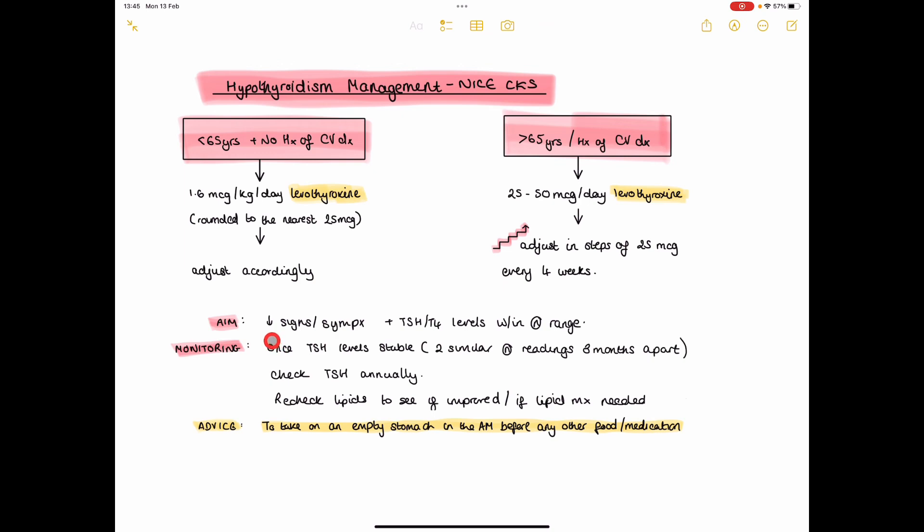The aim is resolution of signs and symptoms and normal thyroid function tests. Once the thyroid stimulating hormone TSH levels have become stable, which NICE defines as two similar normal readings three months apart, you can check the TSH annually.